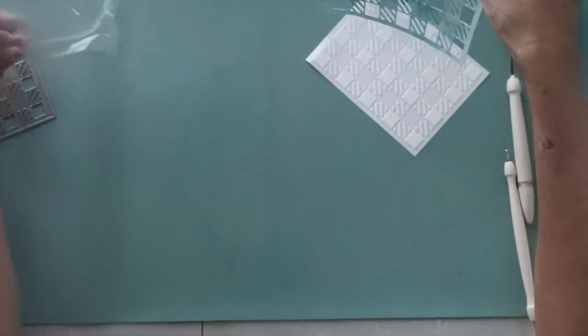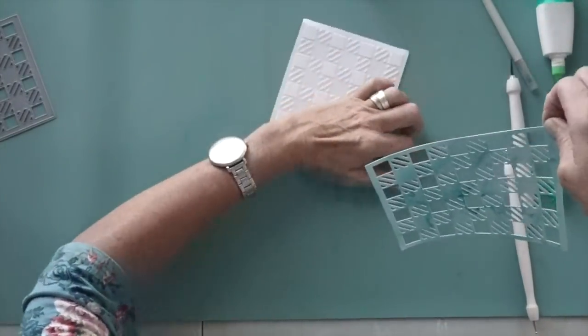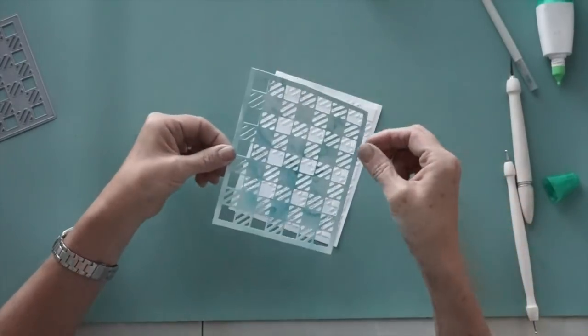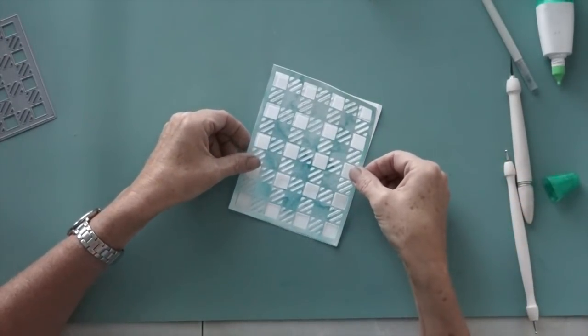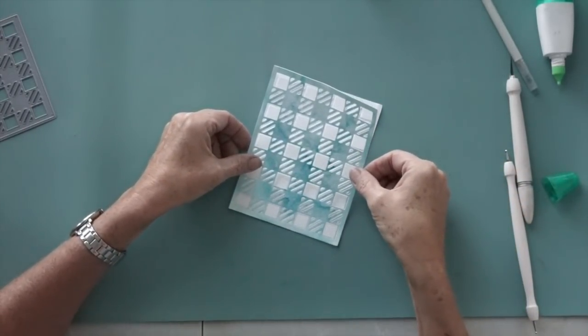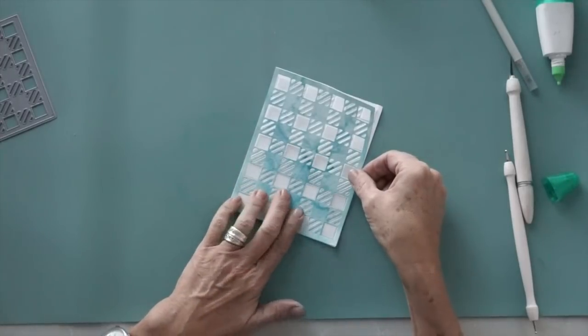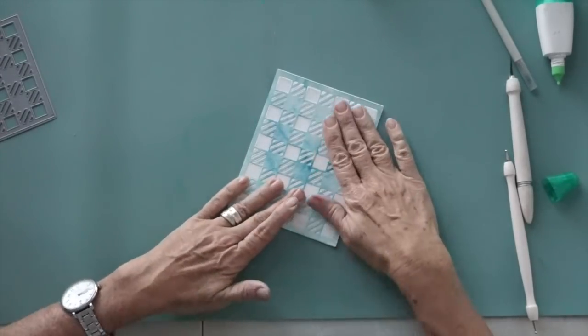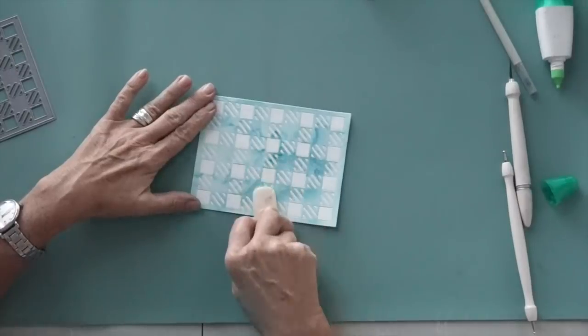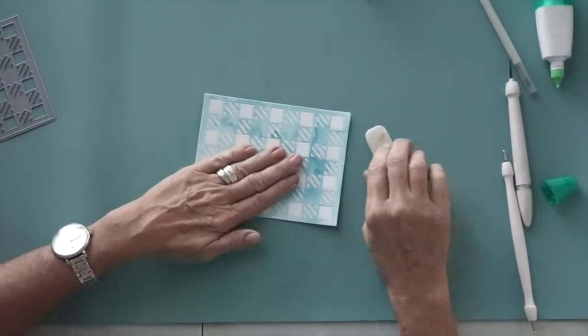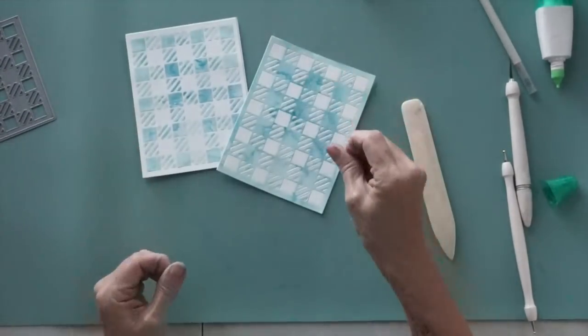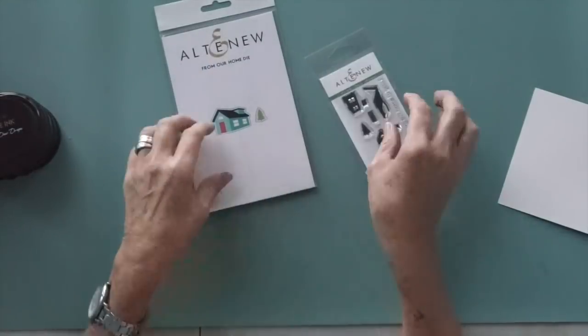For adhering that large positive piece of the die you could totally just use some spray adhesive or whatever you prefer that's quick and easy. I didn't have mine handy at the moment and my tombow glue was still handy so that's what I ended up using. Then I used my bone folder to burnish it well and make sure it was all well adhered.